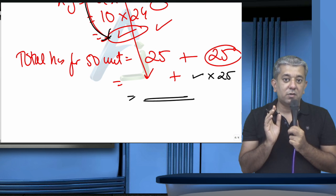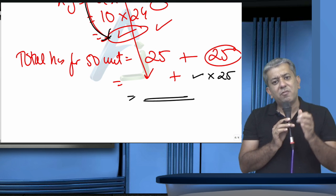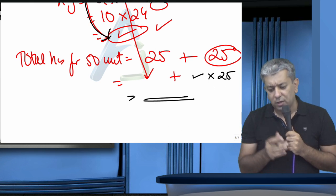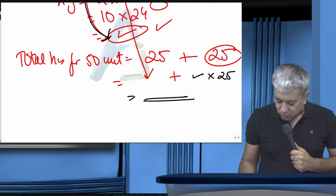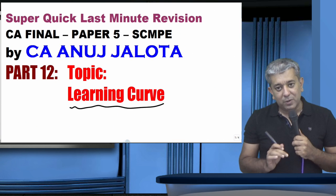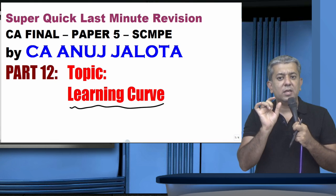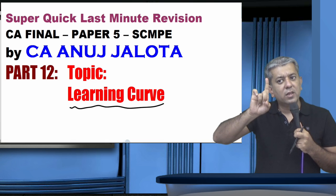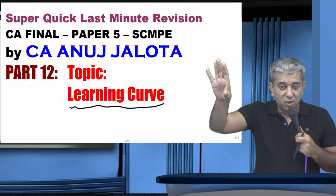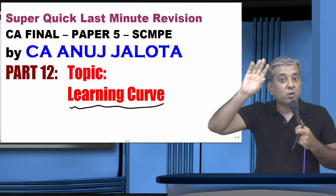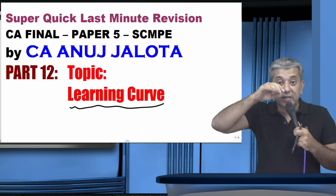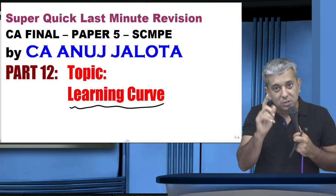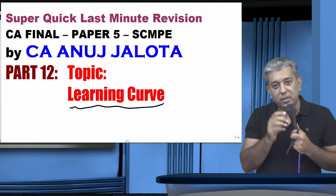Key concept to remember: whenever you reach the perfection stage, every new unit takes the same number of hours as the last unit before perfection. This chapter is now done. Learning curve won't come as an independent question, but will be combined with other chapters — budgetary control, standard costing, capital budgeting, external pricing. Revise it properly and see you in the next lecture.